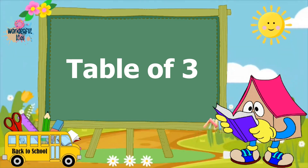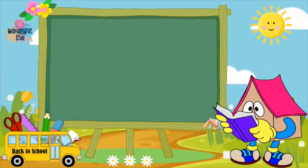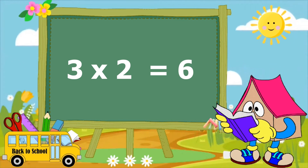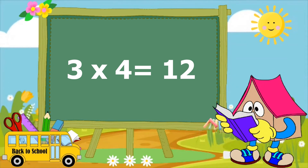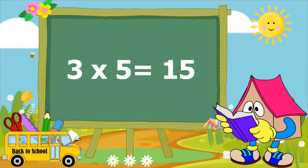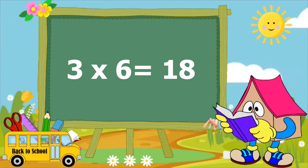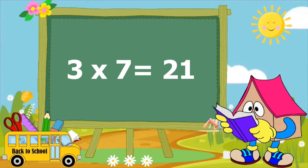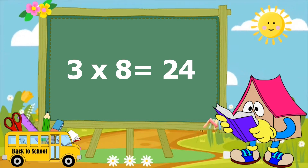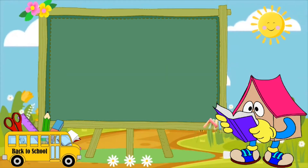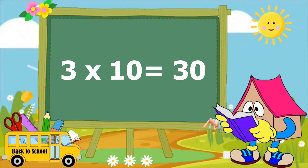Table of 3. 3×1 is 3, 3×2 is 6, 3×3 is 9, 3×4 is 12, 3×5 is 15, 3×6 is 18, 3×7 is 21, 3×8 is 24, 3×9 is 27, 3×10 is 30.